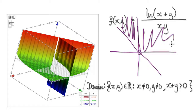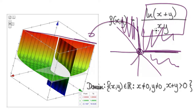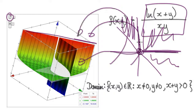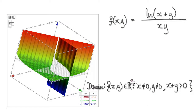Everything here is fine except from the vertical line x equals 0, and everything here is fine except from the horizontal line y equals 0. So your domain is: (x, y) belonging to ℝ² such that x cannot be 0 and y cannot be 0, within the region y greater than negative x. Plot this in a 3D graph plotter, use the rotate button, look down on it, and you can see this domain clearly.